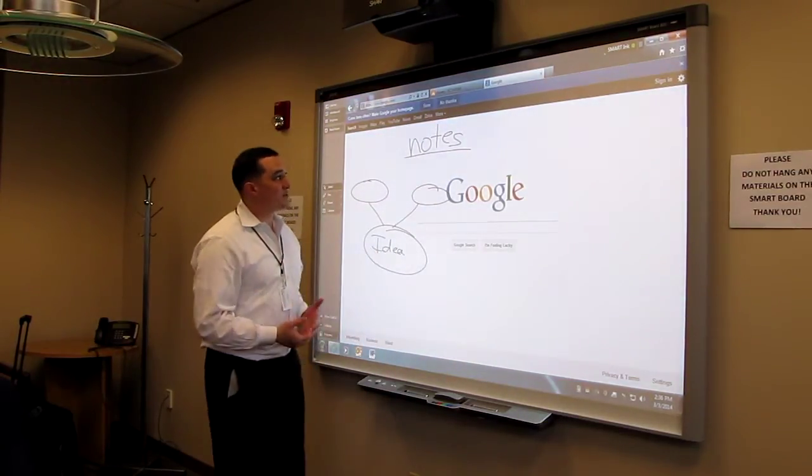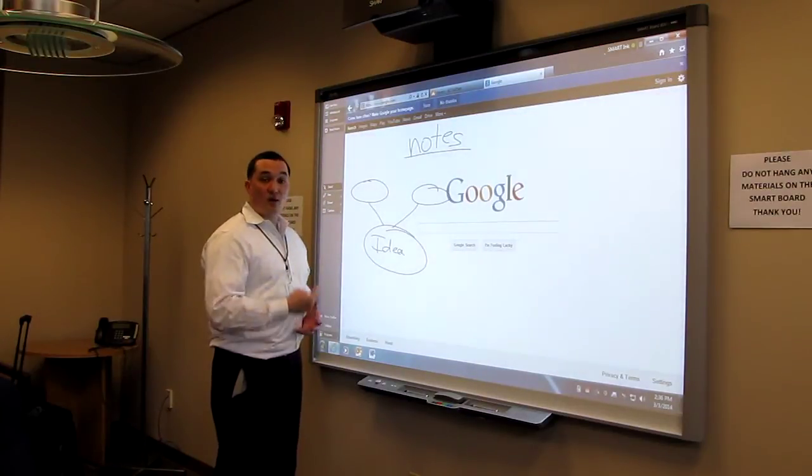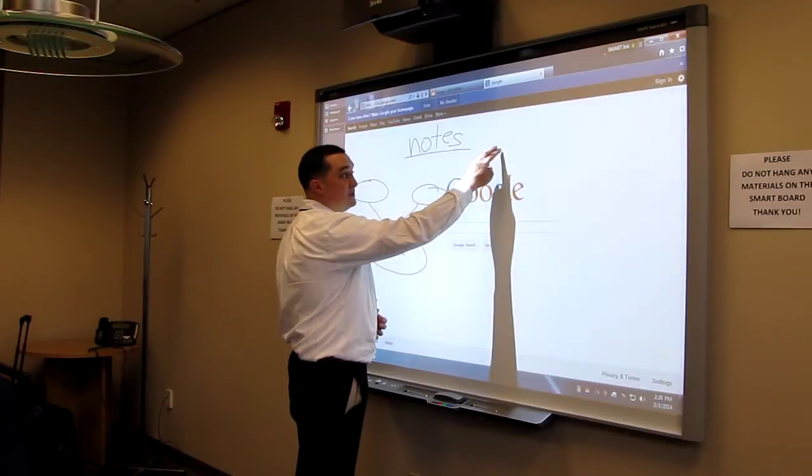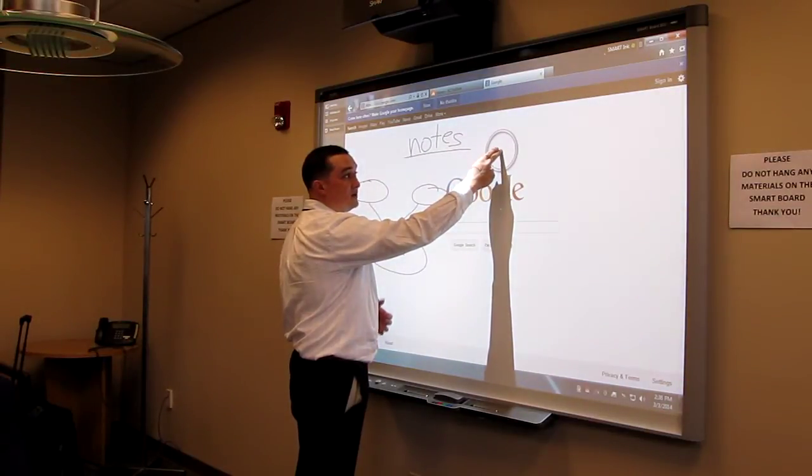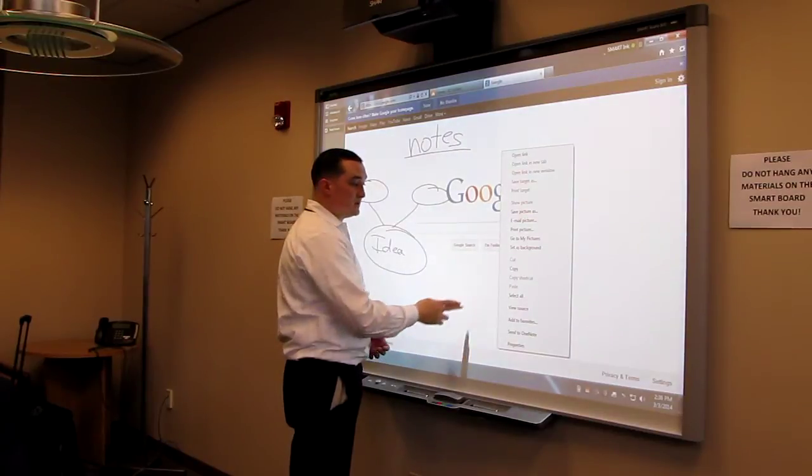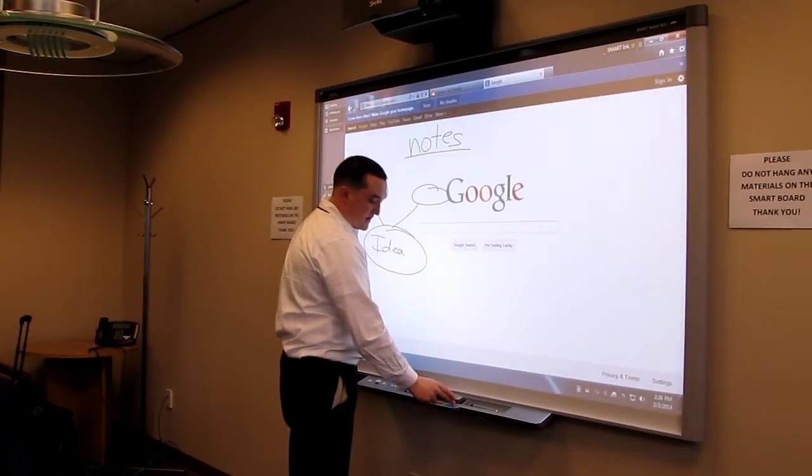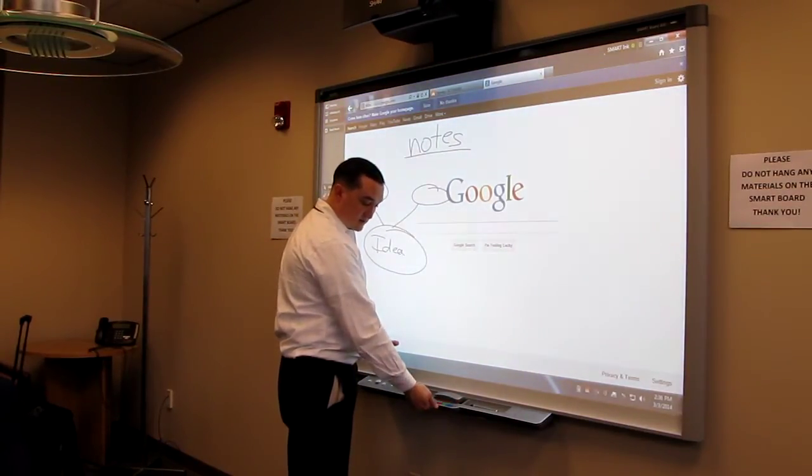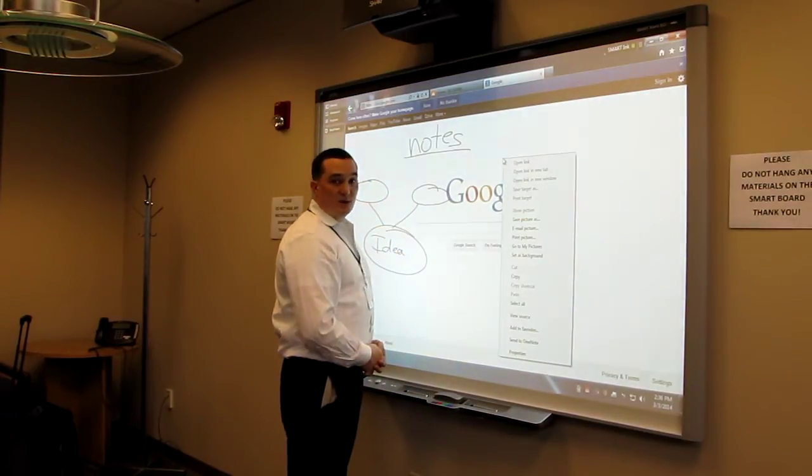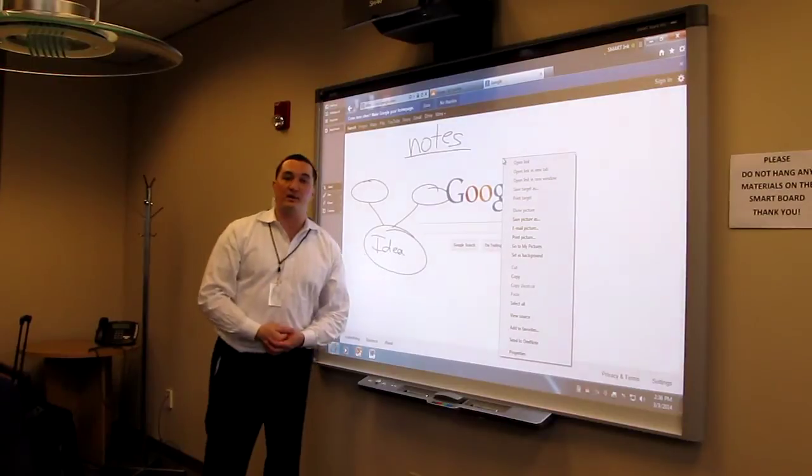So again, open a website. I talked about left clicking. To right click, I simply touch and hold. You see that circle up here means you've held long enough I can get my right click menus. I can also touch a right click button to the right of the colors on the pen tray. And that also gives me a right click, my right click menus.